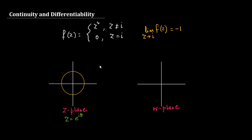Any point z on this circle can be represented as z = e^(iθ), and z = i will be a specific point on this circle. This is the scenario in the z-plane: I have considered the unit circle with the point (1, 0), and for any z at angle θ, we have z = e^(iθ) since the radius is 1.